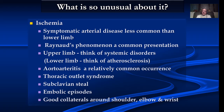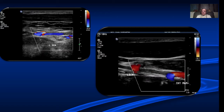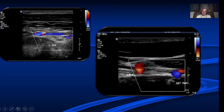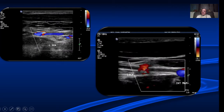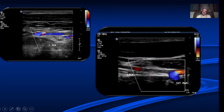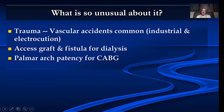In the upper limb we need to think of systemic disorders, collagen disorders, aortoarteritis, thoracic outlet syndrome, and embolisms, which are more common in the upper limb compared to the lower limb. Patients very often have very good collaterals, and therefore symptoms are often less severe. For example, a patient with a complete occlusion of the subclavian artery had an excellent collateral from the internal mammary artery and symptoms were not too bad. Trauma is also very common — industrial accidents, agricultural accidents, and electrocution injuries.